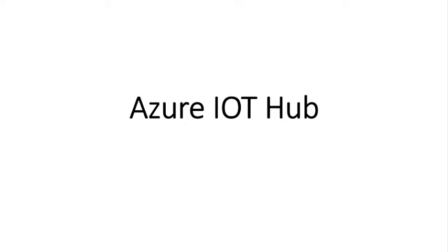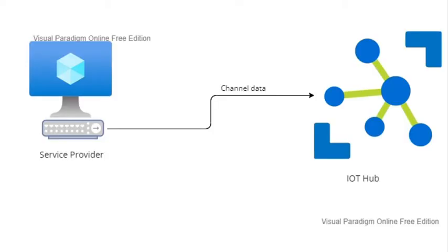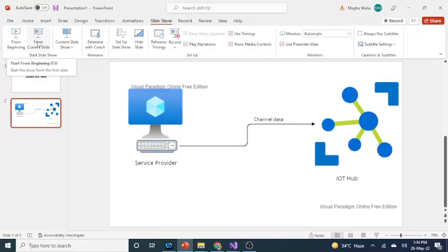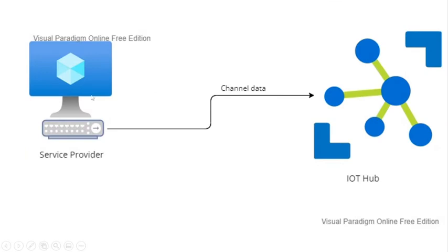The example I'm going to use is this: let's suppose we all have a television, and we have a service provider like Airtel or Tata Sky. Every service provider has remotes, and every time we have a service provider we have some channel packs - some basic channel packs and some premium channel packs. I'm going to do that implementation using IoT Hub, starting with a single device - a single television.